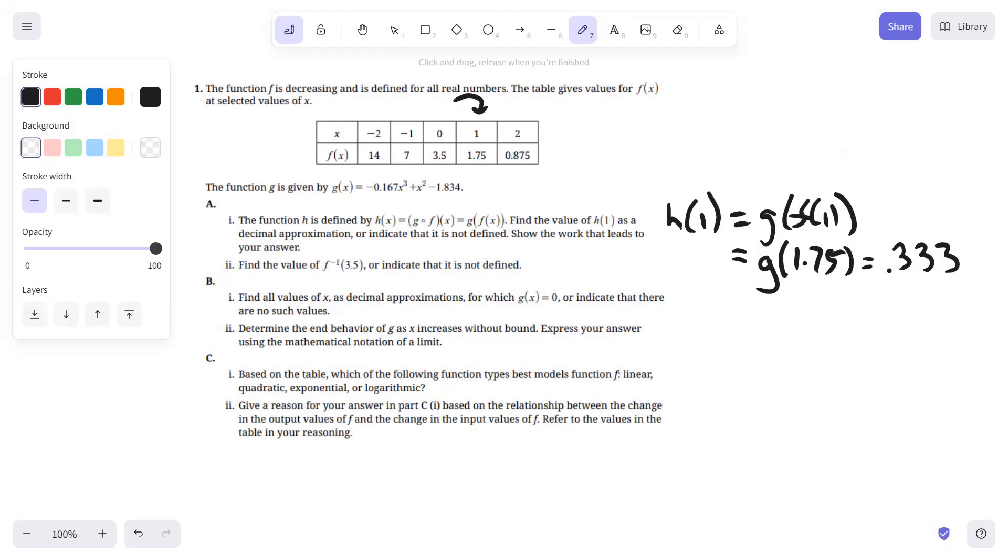Second part of question A, find the value of F inverse of 3.5 or indicate that it's not defined. So 3.5 is the Y value for the function F, so the Y value for F inverse is going to be the X value that corresponds with 3.5 from F, namely 0.